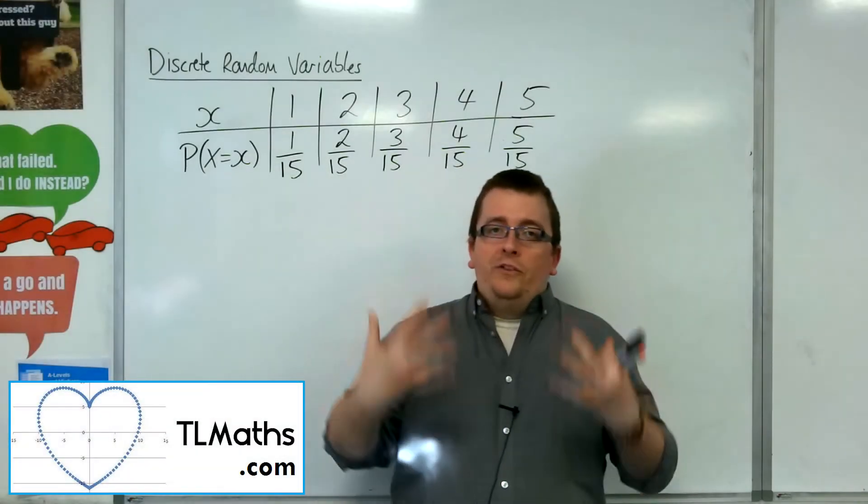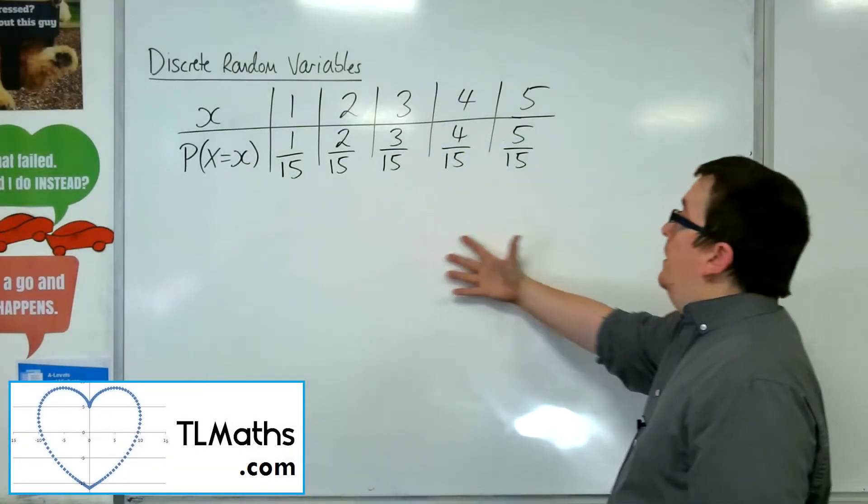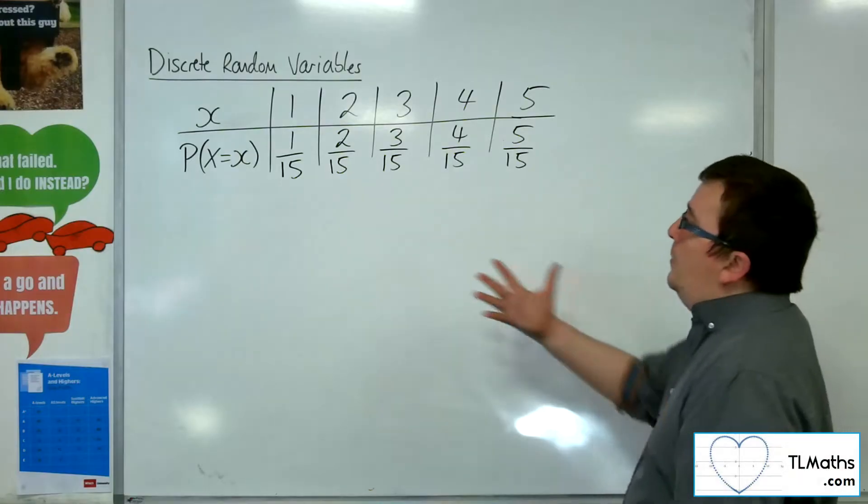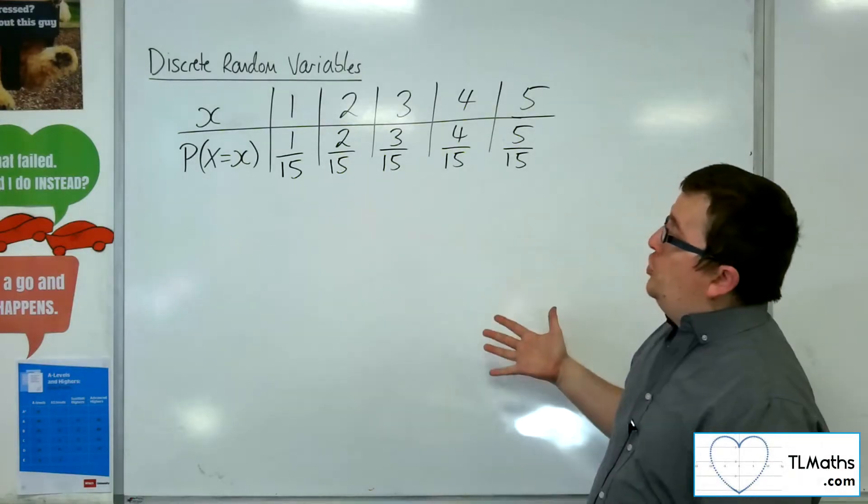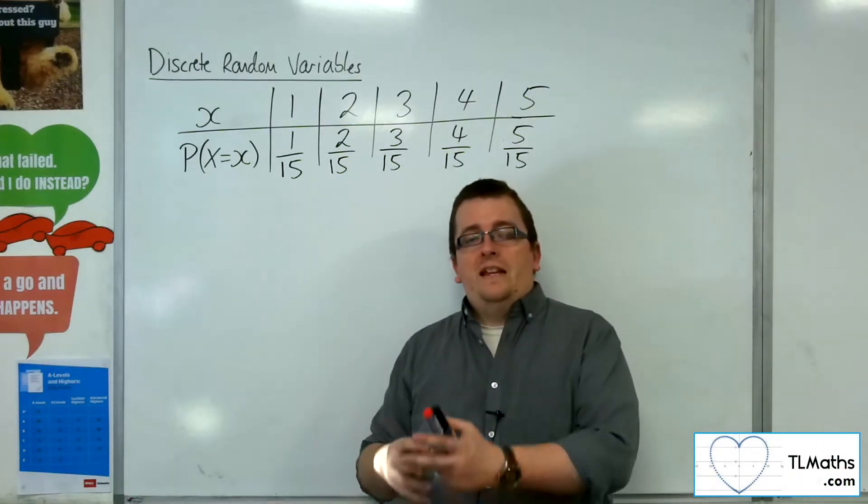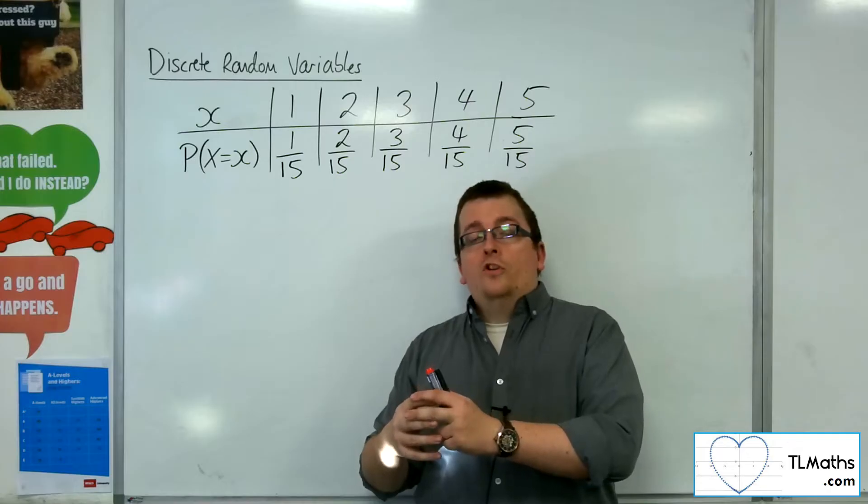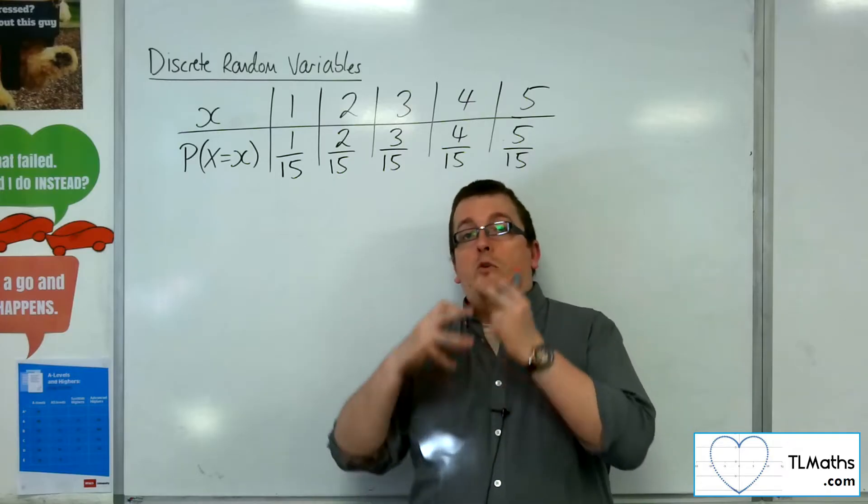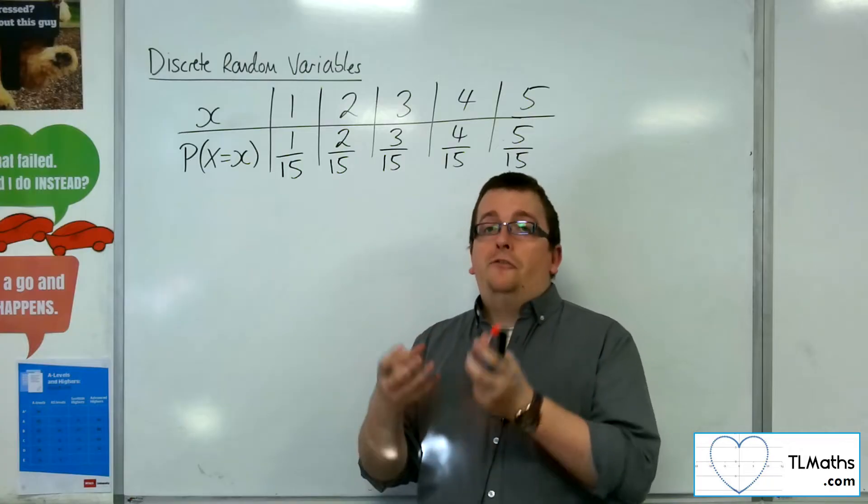Okay, so in some cases, like this example, we have a discrete probability distribution. Sometimes it's more convenient to write the distribution in a more succinct form, and we can write it as a function.